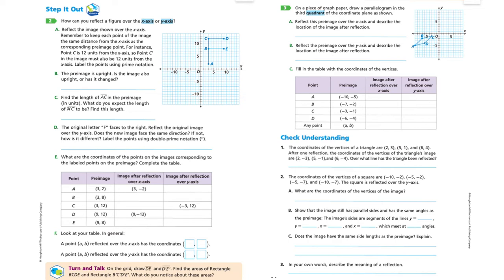For D, it says the original letter F faces to the right. Now they want you to reflect this image over the y-axis. Think about where it might be, which quadrant. This is quadrant one, this is two, three, and four. Because you're reflecting over this y-axis, it's going to be here in quadrant two. Is it going to face the same direction? If not, how is it different? Label the points using the double prime notation. So now you'll have A double prime, B double prime, C double prime, and so on. Go ahead and pause the video and do that.